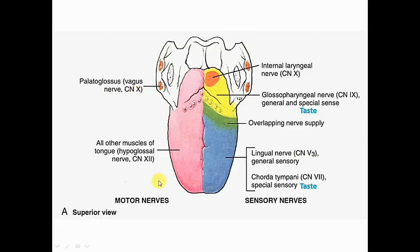In the sensory supply of the tongue, in the anterior two-thirds, the lingual nerve — which is a branch of the posterior division of the mandibular nerve — carries general sensation, whereas the chorda tympani nerve, which is a branch of the facial nerve, carries taste sensation from the anterior two-thirds of the tongue.